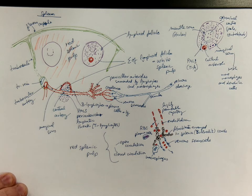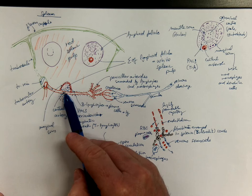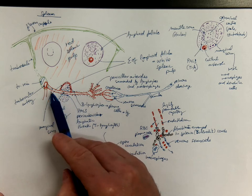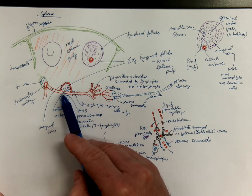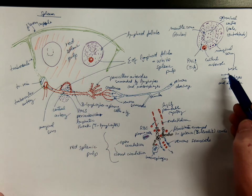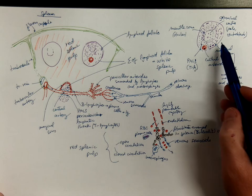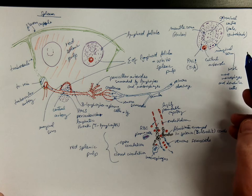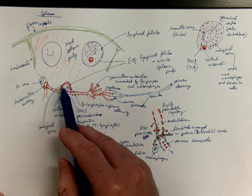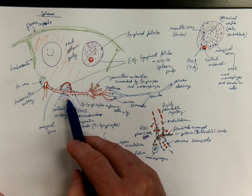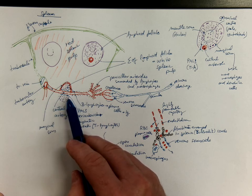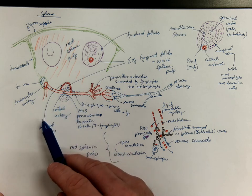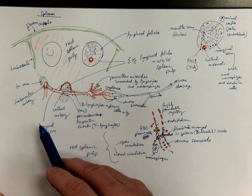We can say that the blood is being filtered here — its antigens are offered to T-lymphocytes, antigen-presenting cells, and B-lymphocytes. The B-lymphocytes are producing immunoglobulins here. So the white pulp of the spleen plays a similar role for filtration of antigens and immune response as the lymph node plays for the lymph.